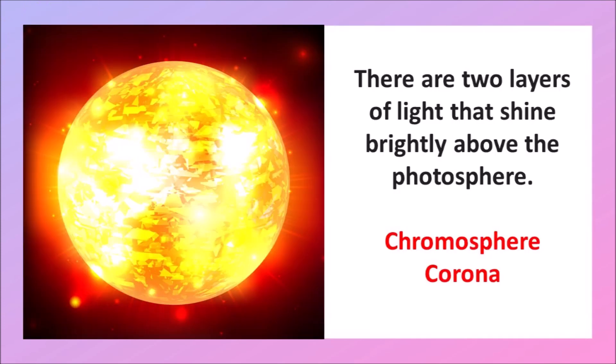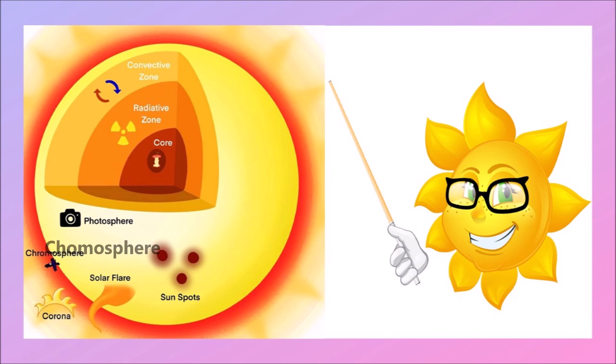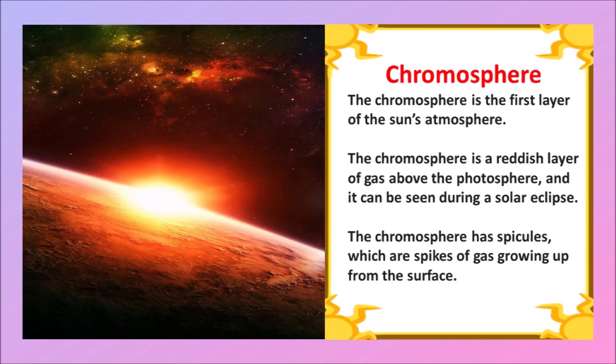There are two layers of light that shine brightly above the photosphere: chromosphere and corona. The chromosphere is the first layer of the Sun's atmosphere. The chromosphere is a reddish layer of gas above the photosphere, and it can be seen during a solar eclipse. The chromosphere has spicules, which are spikes of gas growing up from the surface.